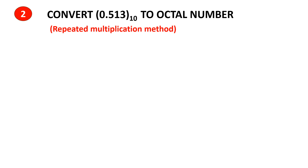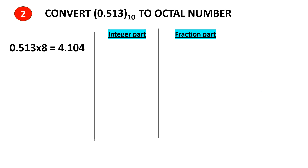Problem 2: convert 0.513 from base 10 to an octal number. We use a method called the repeated multiplication method. Since the required base is 8, we use 8 for the repeated multiplication. First multiply 0.513 by 8 and you get 4.104. The integer part is 4 and the fraction part is 0.104.